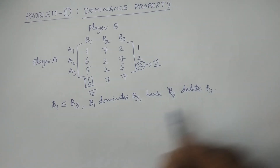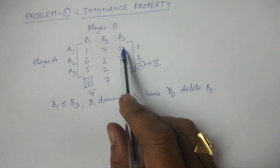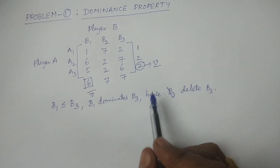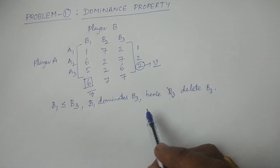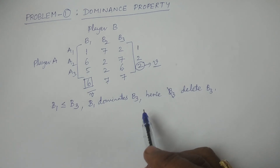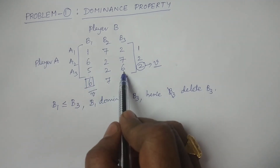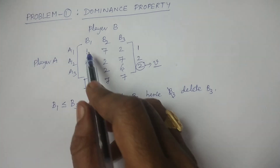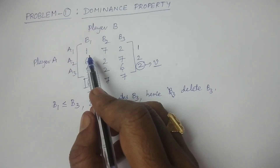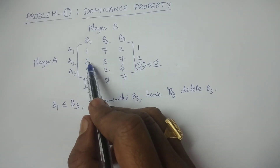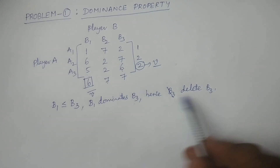Since player B never chooses maximum loss, whichever strategy has greater elements, you delete that particular strategy by comparing with another strategy. We compared B1 and B3: the elements in B3 are more, therefore B1 dominates B3 and we can delete B3.